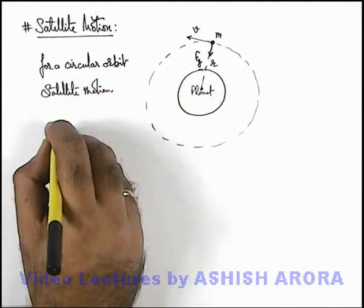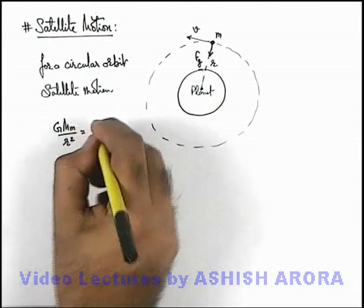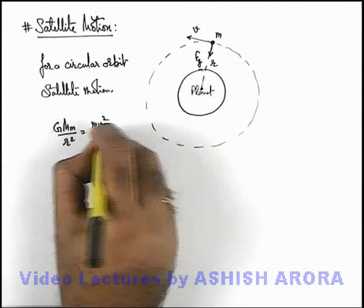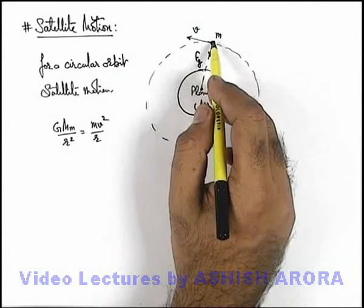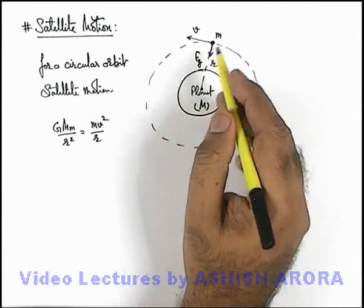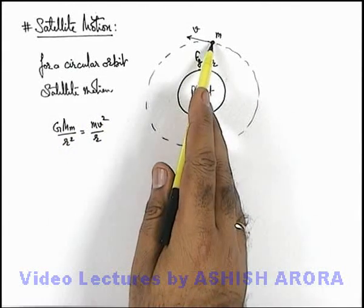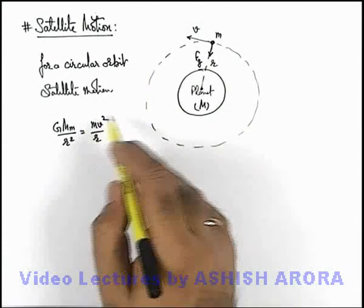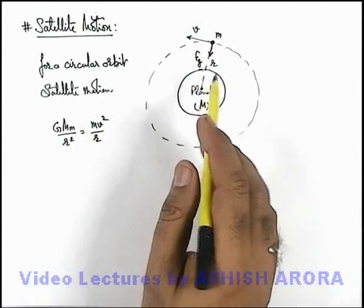We must use G M m by r square equal to m v square by r. Here M is the mass of planet, small m is the mass of body or satellite which is revolving around the planet. Here the gravitational force acting on the body will provide the necessary centripetal force, it will continue to move in a stable circular orbit.